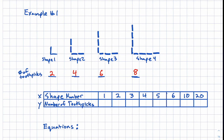We're looking for some sort of a pattern, and we can definitely see that pattern. If we put them in a table: shape one was two, four, six, eight. If we kept the shape going on, shape five would have five going up and five to the right, which would make 10. Shape six would have six going up and six going to the right, making 12. If we skipped ahead to shape number 10, we'd have 20 toothpicks. The last one would have 40.